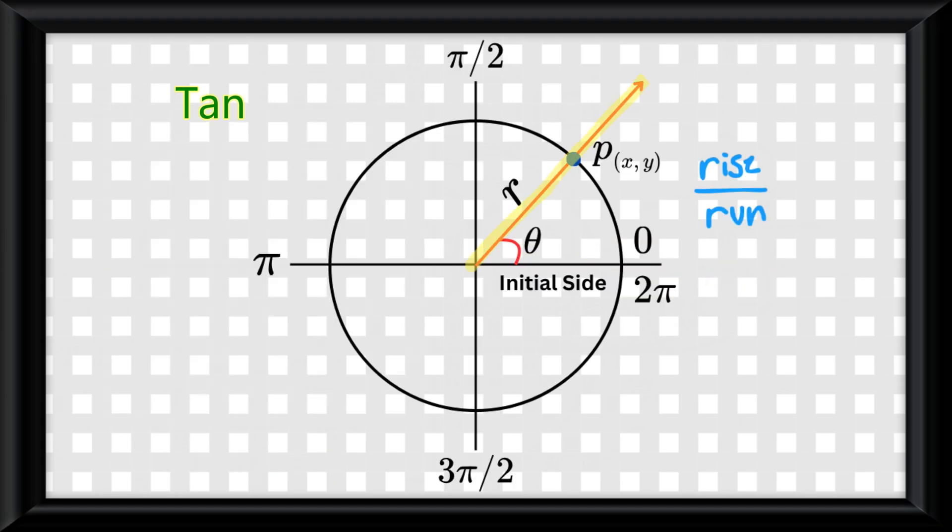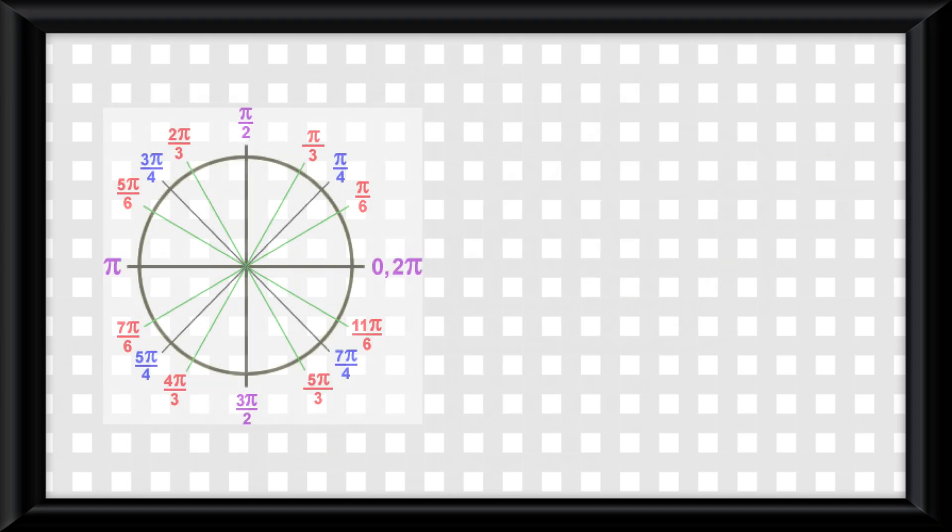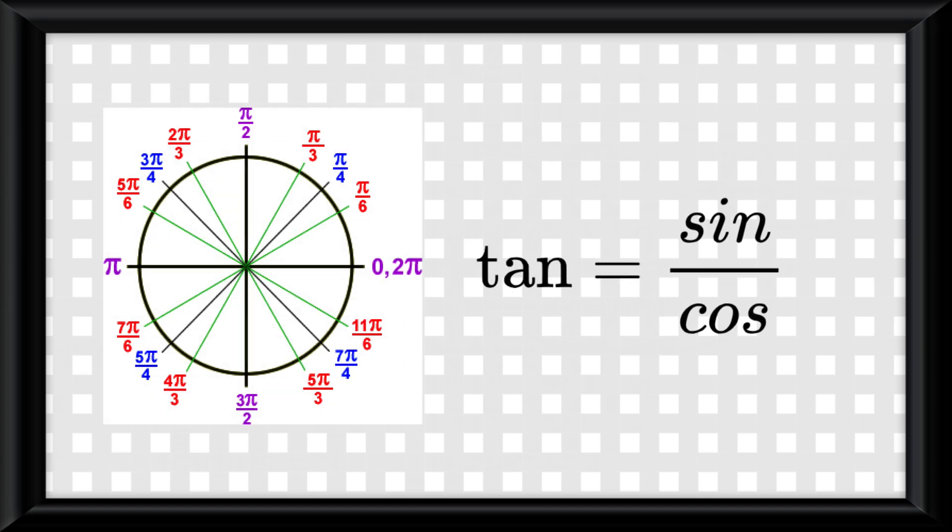Tangent deals with the slope, meaning rise over run, or y over x. In the unit circle, it would mean tangent is equal to sine over cosine.